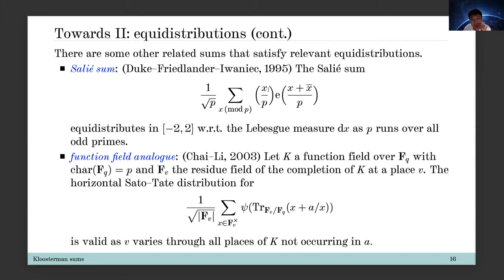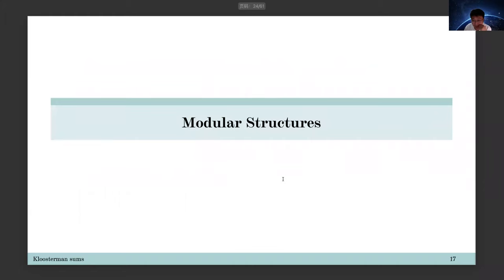There are many other related sums. For instance, we can define the Salié sum with a quadratic twist. There is very impressive work by Duke, Friedlander, and Iwaniec showing that the normalized Salié sums satisfy equidistribution, but the measure is quite different — it is a natural bigger measure instead of the Sato-Tate measure. Also there is a function field analog by Katz, Chinis, Chai and Wan, and Lee, where they can prove the horizontal Sato-Tate distribution.